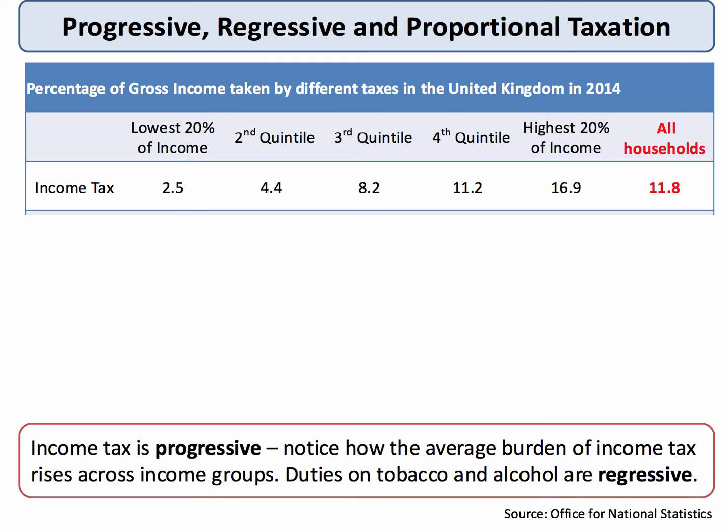You can see from this table that income tax in 2014 took just under 12% of the gross income of all households, but there was quite a significant difference. For the poorest fifth of households, it took 2.5% of their gross income, whereas for the people at the top end of the income scale it took nearly 17%. So income tax is fairly progressive — it does have the effect of redistributing income a little bit as we go through the income levels.